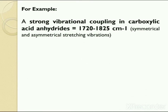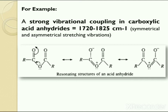For example, a strong vibrational coupling is present in carboxylic acid anhydrides, in which symmetrical and asymmetrical stretching vibrations appear in the region 1720 to 1825 cm⁻¹. This interaction is very effective, probably because of partial double bond character in the carbonyl-oxygen bonds due to resonance, which also keeps the system planar for effective coupling.